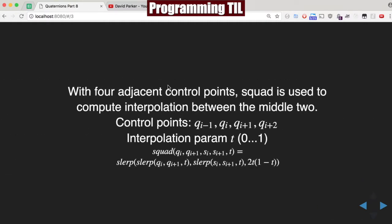So basically, just to compute it, we're going to be using the formula down here. When we have four adjacent control points, the squad is used to compute the interpolation between the middle two, so between these two values right here.